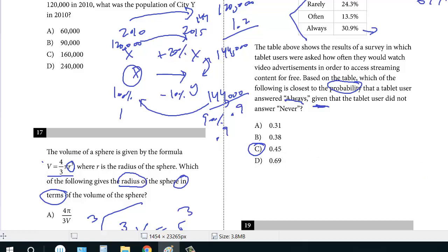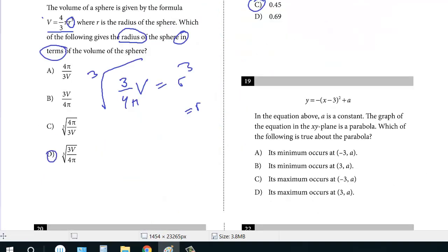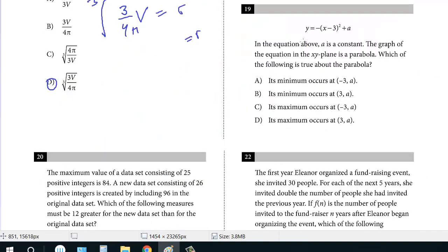We've got one more question on this page, number 19. In the equation above, a is a constant. The graph of the equation in the xy-plane is a parabola. Which of the following is true about the parabola?